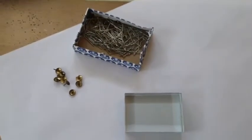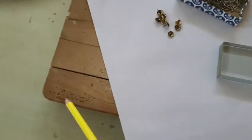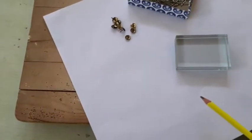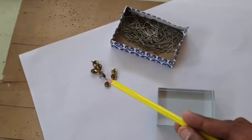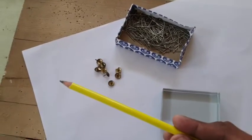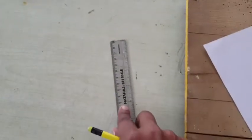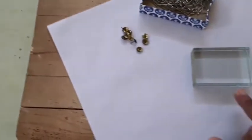For this experiment we require a drawing board, a white sheet of paper, the glass slab and some pins. Apart from this we would also need a scale for drawing the rays properly.